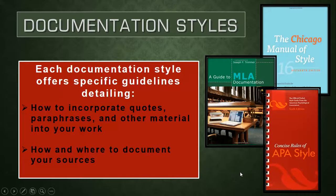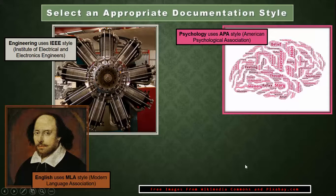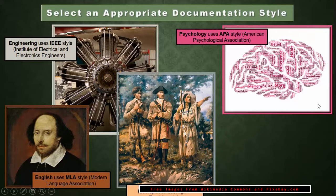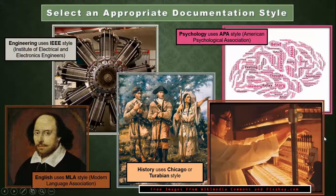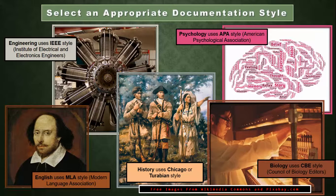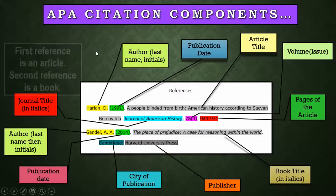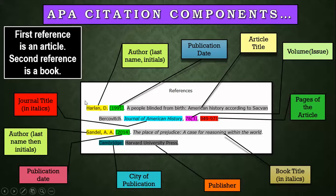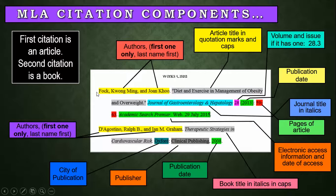That includes in-text citations as well. We have all these manuals at the library if you need them. You'd have to select an appropriate documentation style for the discipline. Engineering uses IEEE. English uses MLA. Psychology and most of the behavioral sciences use APA citation. The history department uses Chicago and Turabian. The biology department uses CBE. APA and MLA are probably the most used. I've given you examples in APA style of an article and a book, and did the same for MLA — if you want, you can stop the video and look at the different parts and how it's put together.